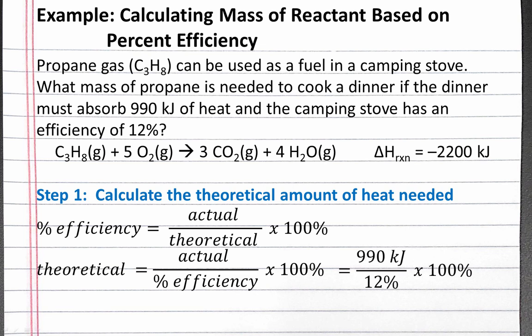Our dinner must actually absorb 990 kJ of heat to cook, and our percent efficiency is 12%. Plugging these numbers into our equation, we get 8.3 times 10 to the third kilojoules of heat. This is the amount that the dinner must theoretically absorb at 12% efficiency.